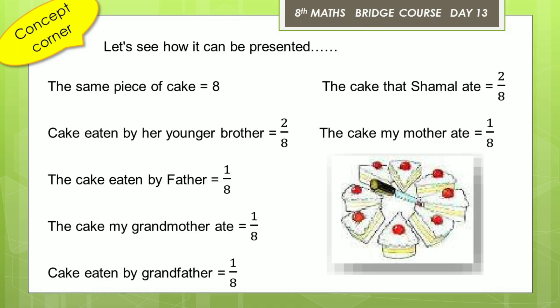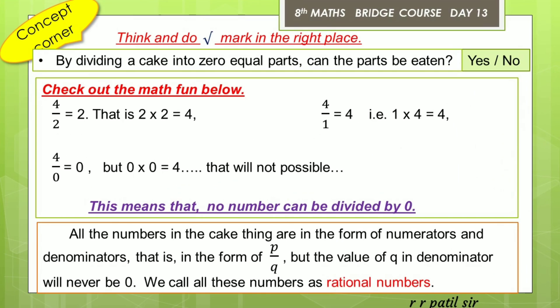This is the complete distribution, represented mathematically. Now think and do: put a correct mark in the right place. By dividing a cake into 0 equal parts, can the parts be eaten? Make the mark — yes or no. That is, 1 upon 0 means the cake has 0 equal parts — we have to think about whether such parts are possible.